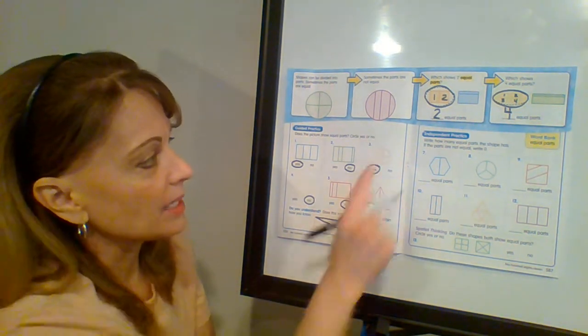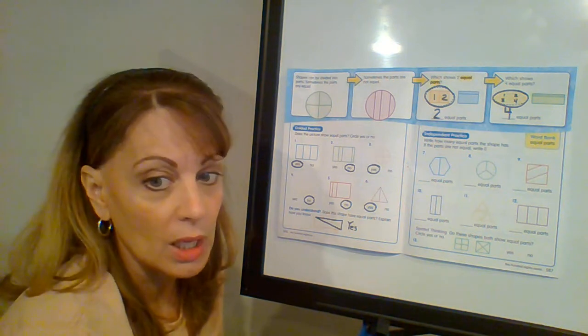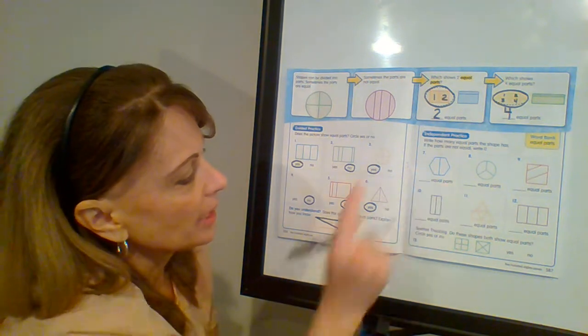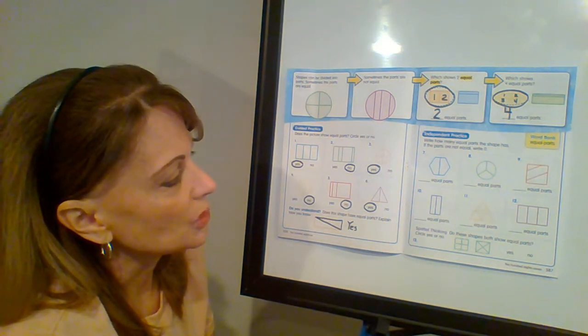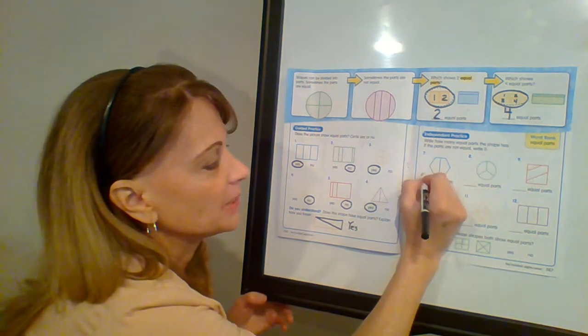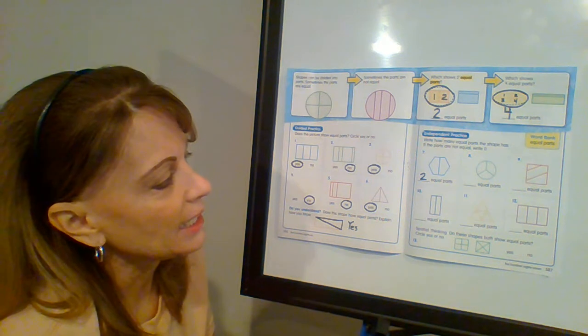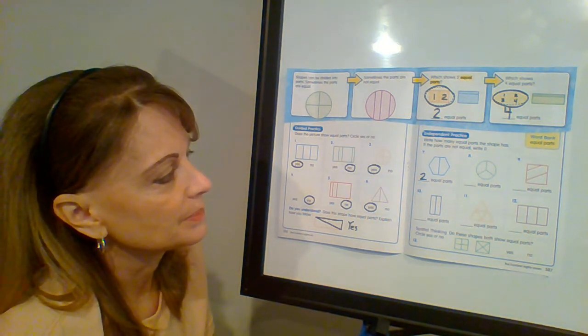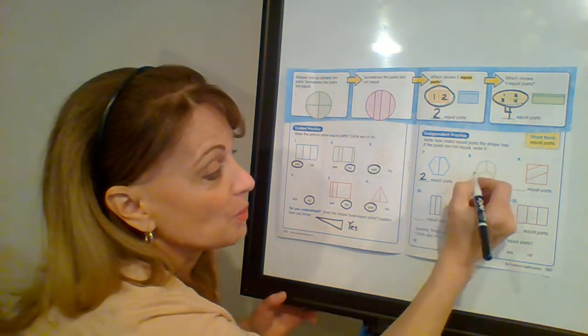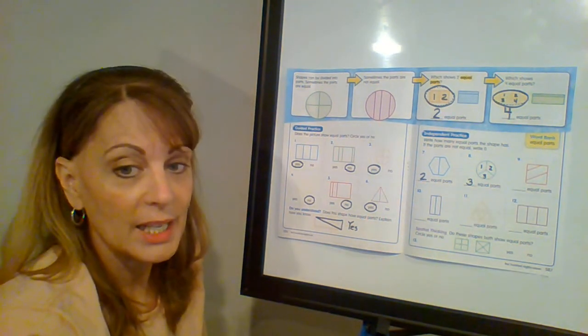All right. So now it says, write how many equal parts the shape has. If the parts are not equal, write zero. How many equal parts? Zero. How many equal parts do you see? Write the number on the line. Did you write two? If you did, you did it correctly. How about number eight? How many equal parts do you see? I hope you said three. One, two, three. Those are three equal parts.